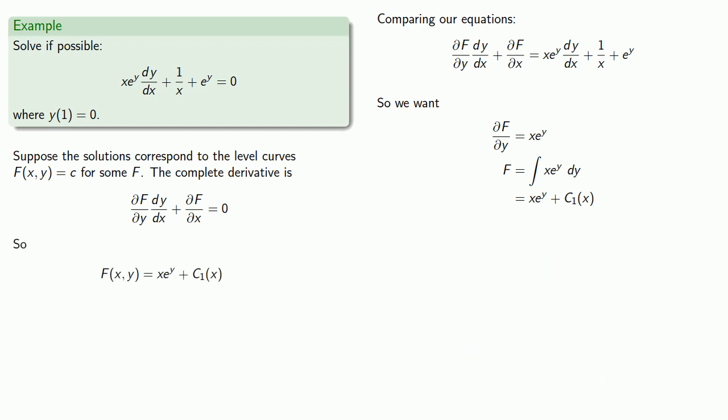Similarly, our partial derivative of f with respect to x is going to be whatever's left over, which is 1 over x plus e to the y. And again, we can find f by finding the antiderivative with respect to x, where we include some function of y only.